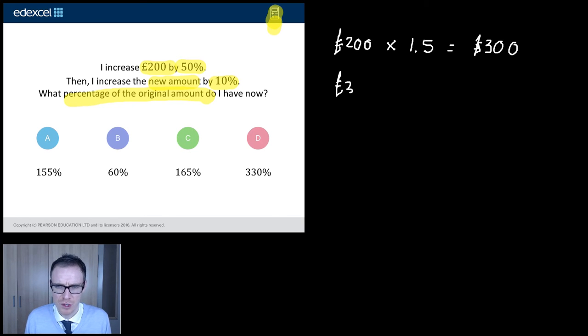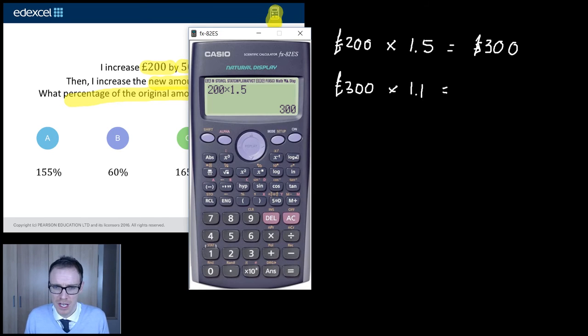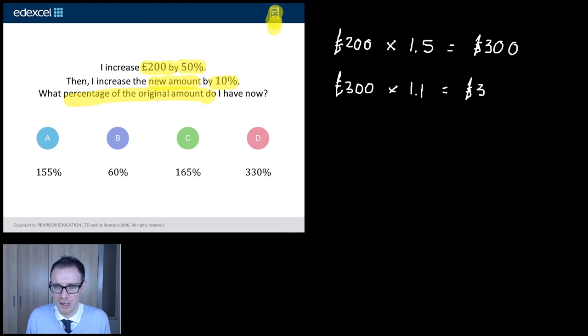And then I get the new amount. So the new amount is £300, and I increase that by 10%. So there's my original, 1, and my 10% is 0.1, so I times by 1.1. So let's get my calculator up again. So I've got £300, and I will times that by 1.1. Flipping heck. Deliberate mistake. 1.1. Do you know what this is going to be? There it is, £330.